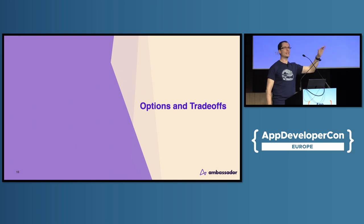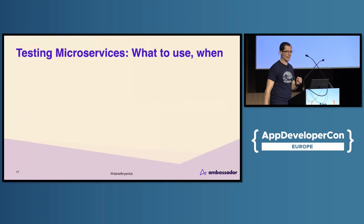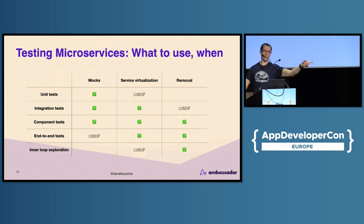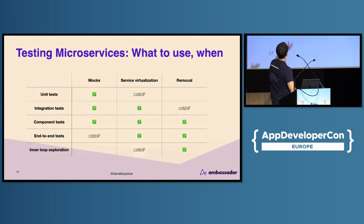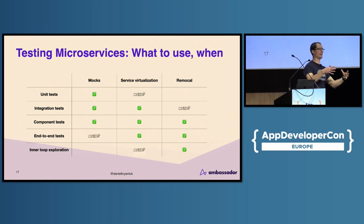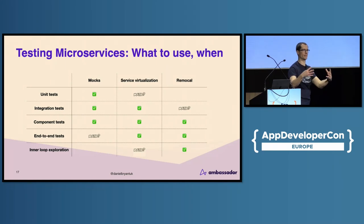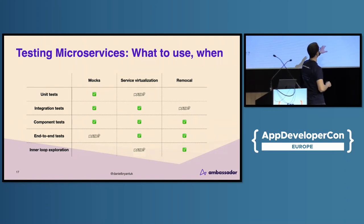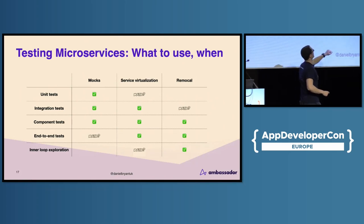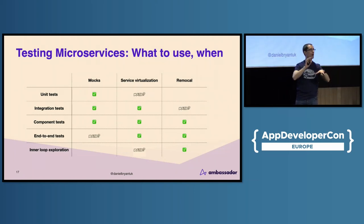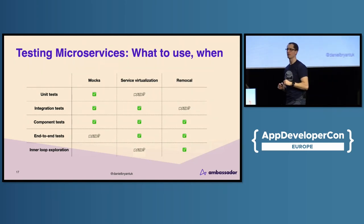With that context set — trading off speed, trading off fidelity — let's look at the options and trade-offs. Along the top we've got mocking, service virtualization, and remote tooling. Along the side we've got the various types of tests. Inner loop exploration is where you've been given a service, maybe a spec, and you want to poke and prod and figure out what it does. I call that inner loop exploration — building my mental model of a third-party or internal dependency. That's why mocking it doesn't make sense, because I can't mock it if I don't know what it does. Remote will make a lot of sense here because I can run the thing in a cluster and do a remote-to-local bridge.